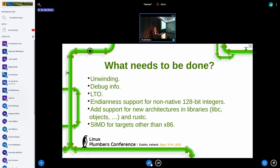So, what needs to be done? Unwinding for panics support. We also don't have any debug info yet. And, link time optimization is not supported yet. We need to support the endianness for non-native 128-bit integers. And, since the goal of this project is to be able to use Rust on architectures that are not supported on LLVM, it would be great to do that. And, to do that, we need some work in the Rust compiler itself, but also in some libraries like the libc and object crates.